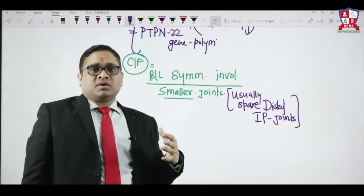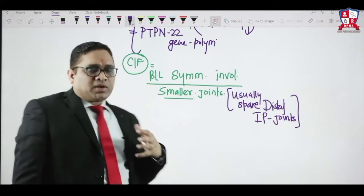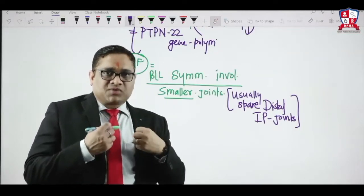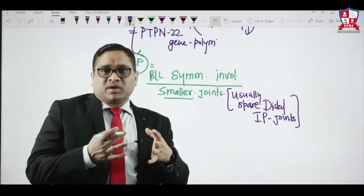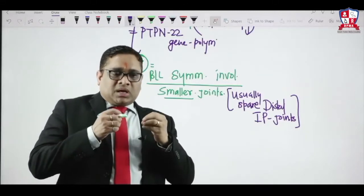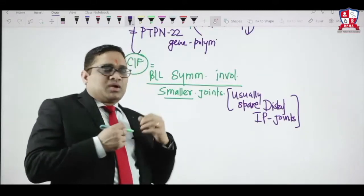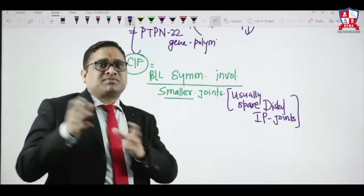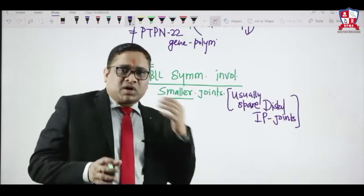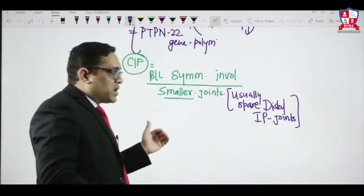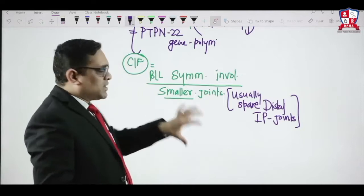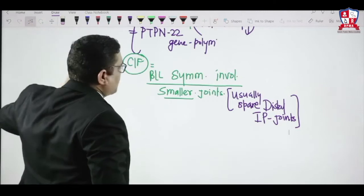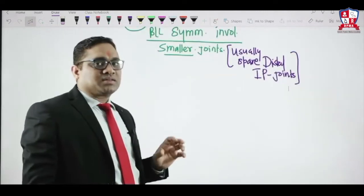A characteristic presentation is morning stiffness — when the patient wakes up they have stiffness, but when they start working, that stiffness is relieved. This is how it differs from osteoarthritis: in osteoarthritis, work aggravates the pain, whereas in RA, work relieves it.